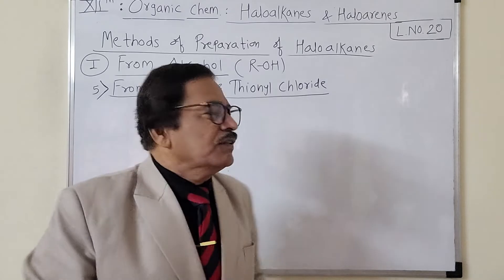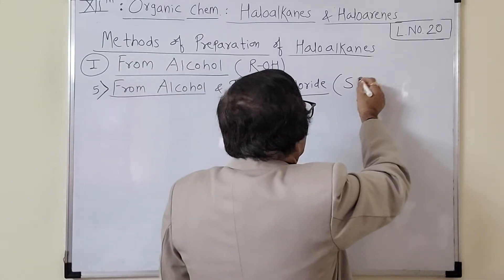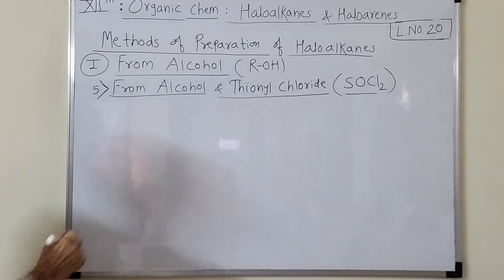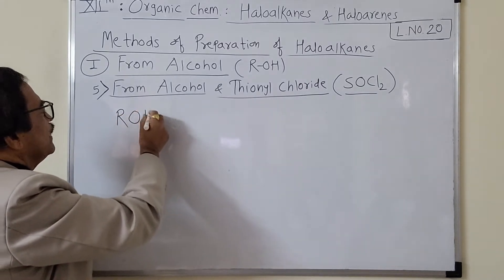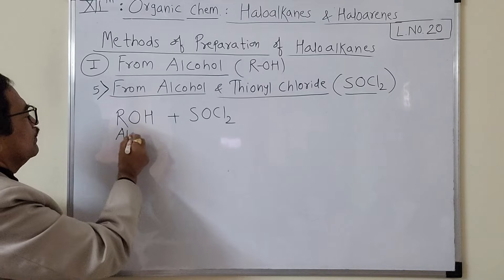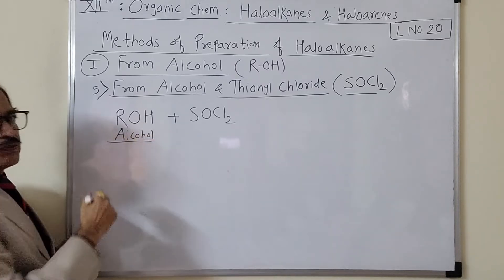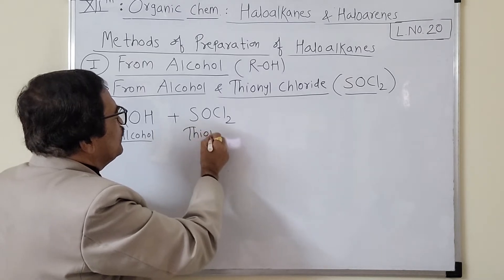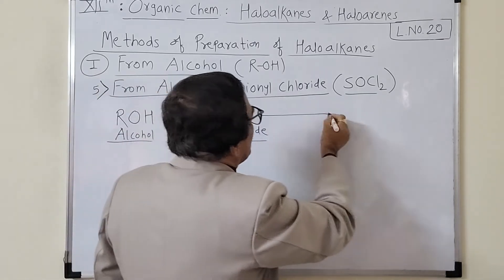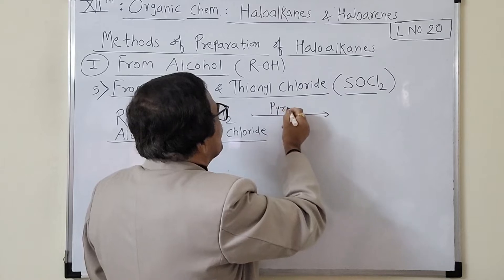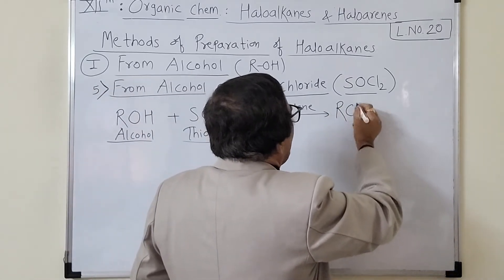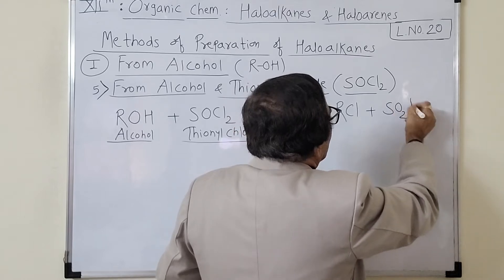Now this fifth one: alcohol and thionyl chloride. Thionyl means that is a sulfur compound. Thionyl chloride ka formula aapko malum hona chahiye, jaisa carbonyl chloride hota hai COCl2. Now the reaction I will write in very simple way: ROH plus SOCl2, this is alcohol and this is thionyl chloride. This is taken particularly in the pyridine solvent.